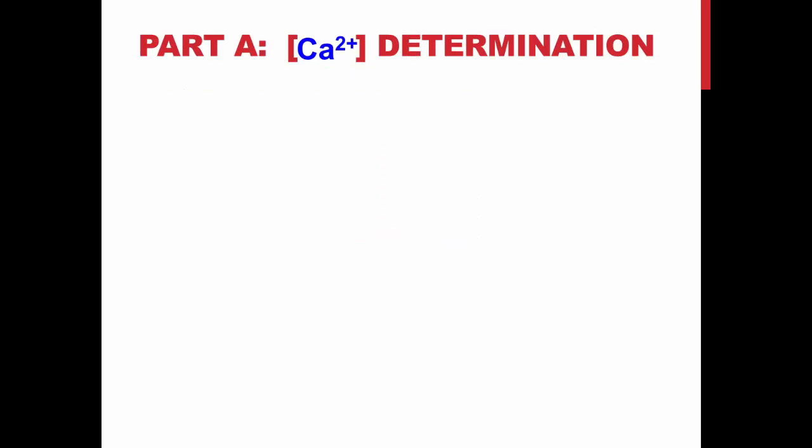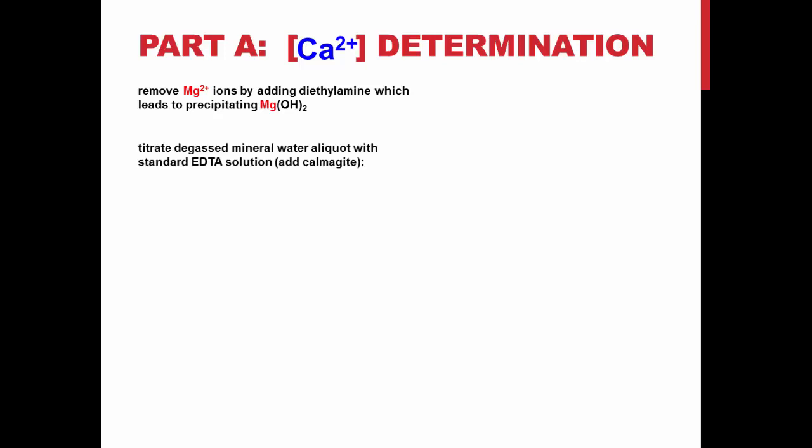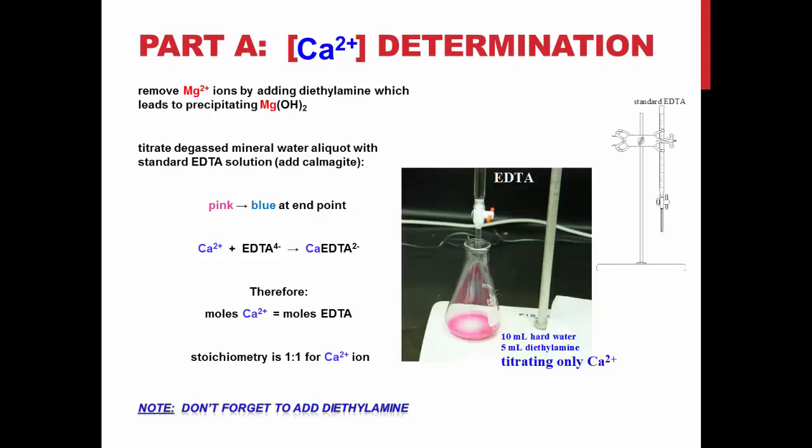Part A, the determination of calcium concentration. Firstly, we will be removing magnesium from the equation by adding diethylamine, which will precipitate out the magnesium in the form of magnesium hydroxide. Then, we will titrate the degassed mineral water with standard EDTA solution. We will be adding the indicator calmagite, which turns from pink to blue at its endpoint. As you can see from this balanced equation, the moles of calcium are equal to the moles of the EDTA, so therefore it has a 1 to 1 stoichiometric ratio. Don't forget to add the diethylamine.